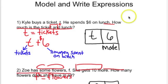Kyle buys a ticket T. He spends $6 on lunch. How much is the ticket and lunch? What we looked at were some key words. We said the word 'and' usually means that we're going to add.